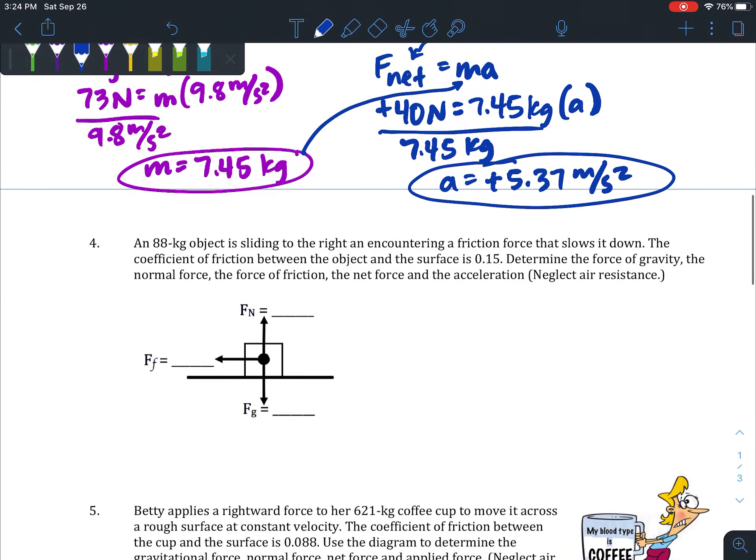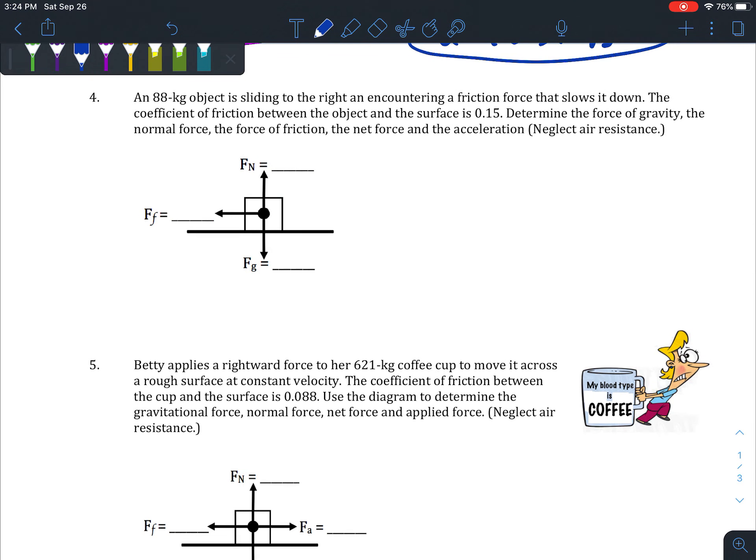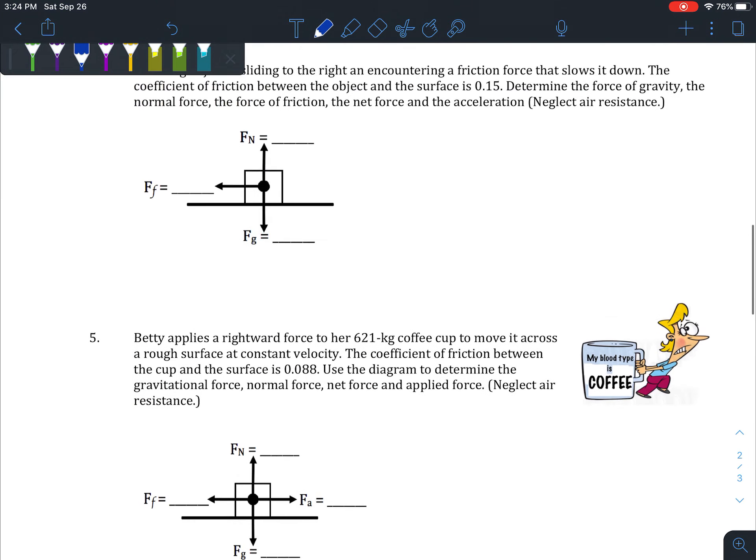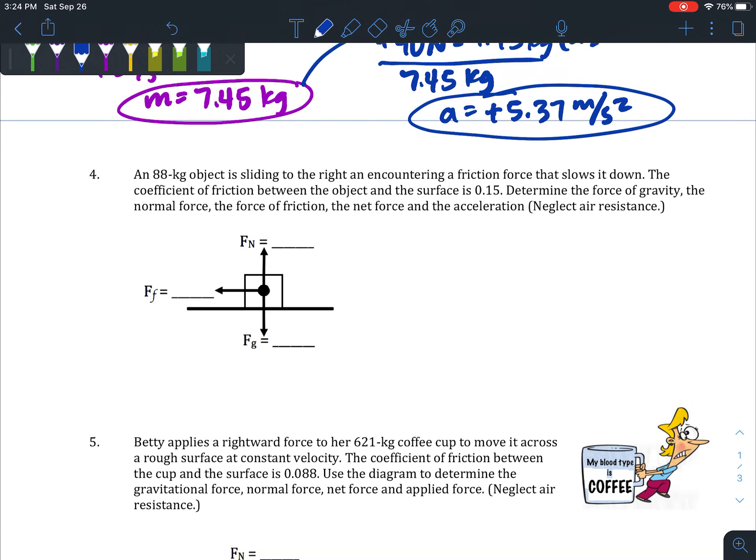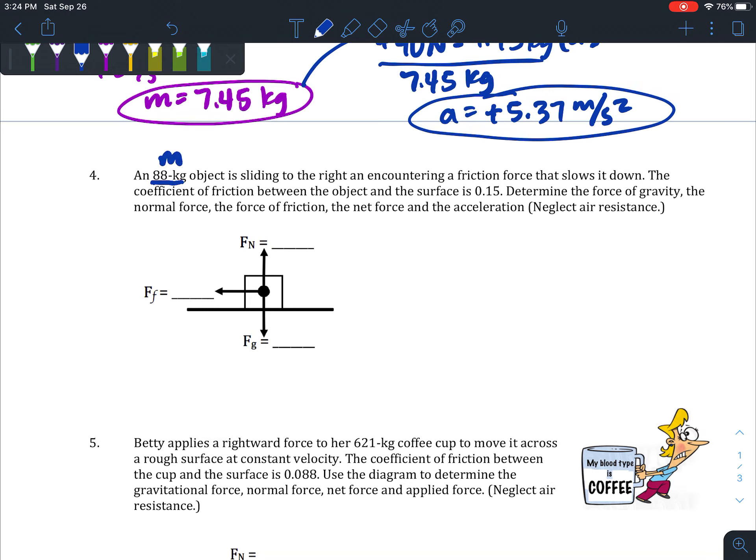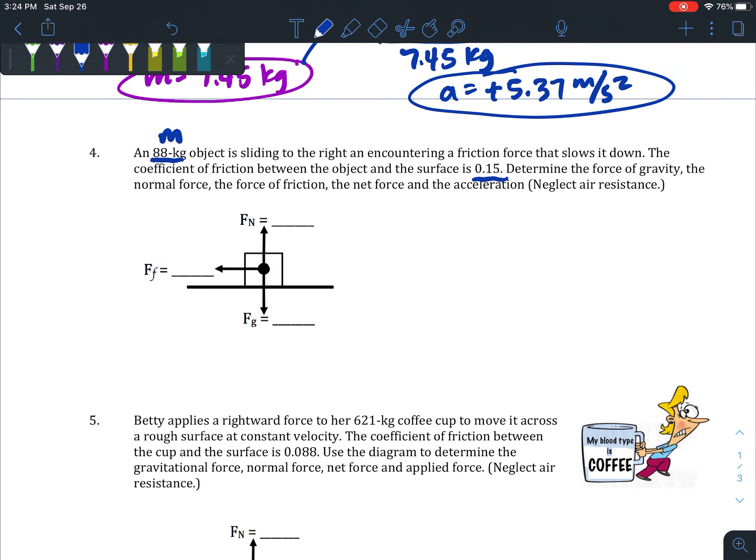If you've already learned about friction, you can go ahead and move on to problems four, five, and six on this sheet. If we take a look at number four, we have an 88 kilogram object sliding to the right and encountering a friction force that slows it down. The coefficient of friction between the object and the surface is 0.15—remember, the coefficient is that funky little Greek symbol mu. We want to determine the force of gravity, the normal force, the force of friction, the net force, and the acceleration—basically everything there is to find.